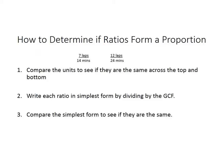Step 1, compare the units to see if they are the same across the top and the bottom. What that means is on the top, this is laps. Well, this is also laps on the top. Bottom is per minute. And this one is also per minute. So these do meet the first requirement of comparing the units. The units are the same across the top and the bottom.